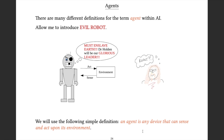The idea of an agent is fairly ubiquitous in AI, and the standard definition is that it's just a mechanism that can sense its environment and act on its environment. This evil robot can act on his environment as well as sensing what's happening in his environment — and that's it, he's an agent.